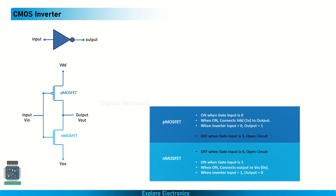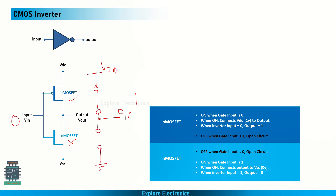To understand the working of this, we need to know how P-MOSFET and N-MOSFET behave. When the input is zero, P-MOSFET will be on and N-MOSFET will be off. Because P-MOSFET is on, we treat it as a closed switch, and we have a positive voltage VDD. Because of that, we get the output as positive voltage, which we treat as logic one. N-MOSFET is off, meaning it is an open circuit — there is no connection from output to ground. So we get logic one as output when the input is zero.